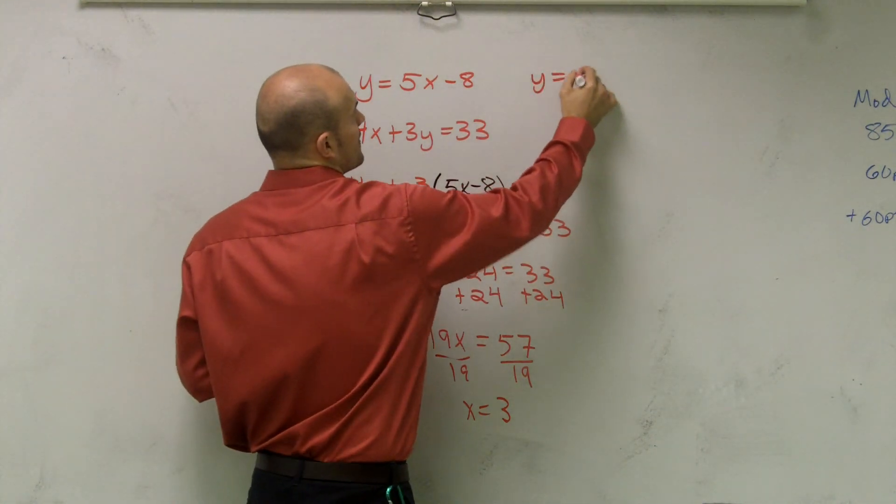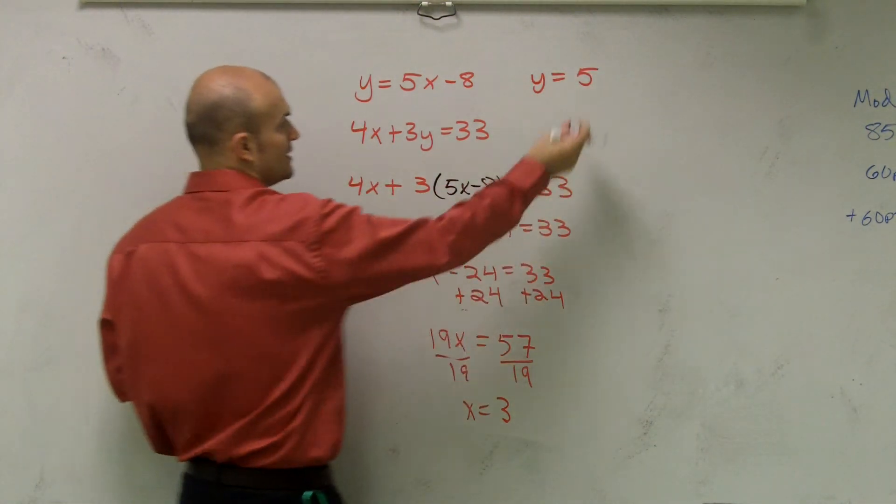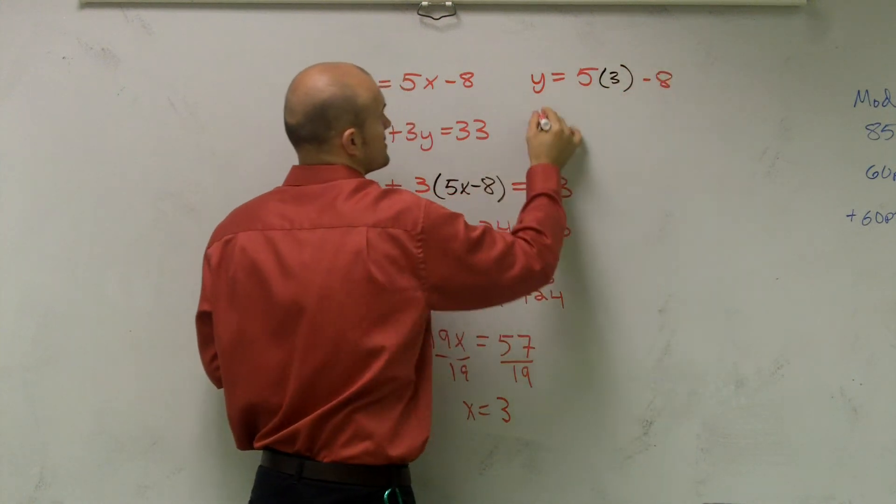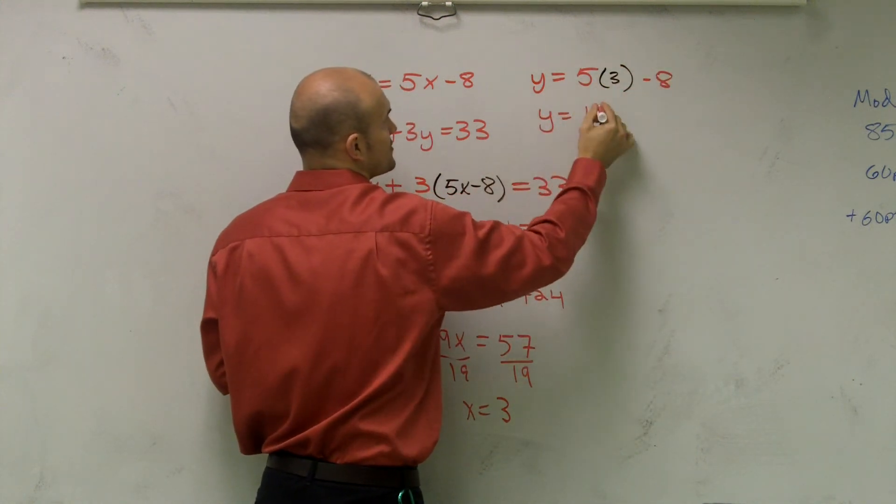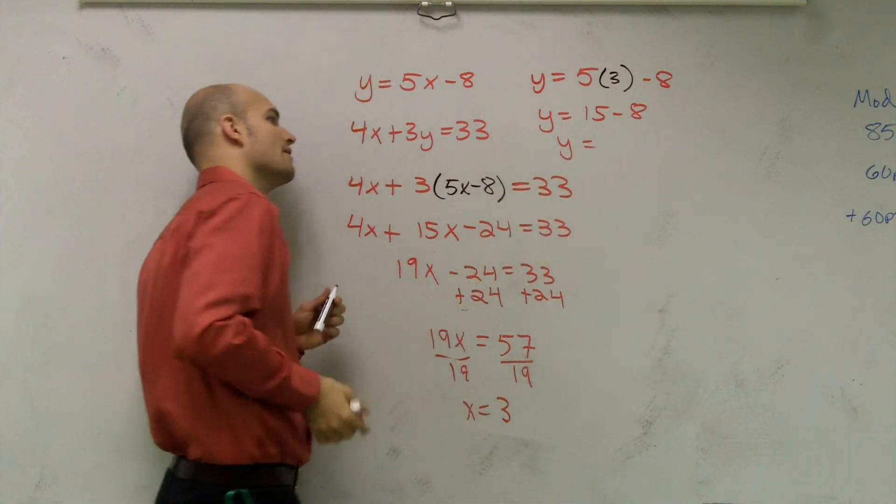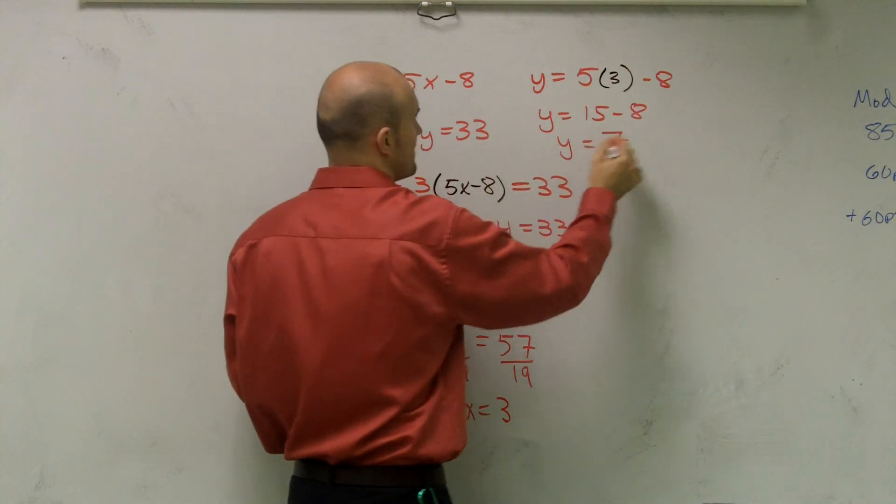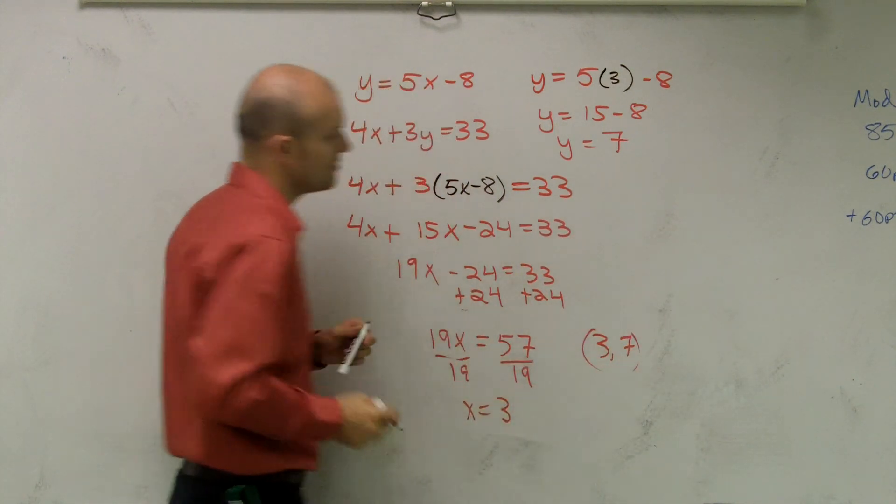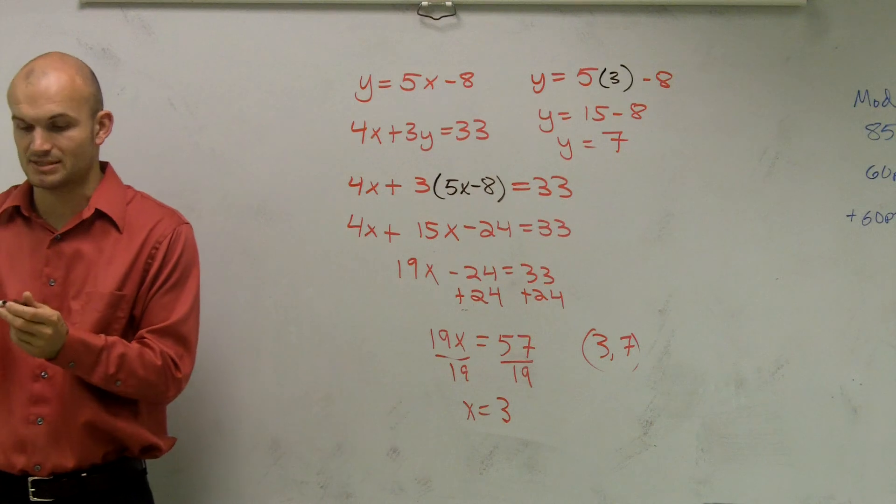So I'll do y equals 5. I'm going to substitute in the value of x, which is 3, minus 8. y equals 5 times 3 is 15 minus 8. y equals 15 minus 8 is going to be 7. So therefore, I can write it as a coordinate point if I wanted to. And my solution is 3, comma 7.